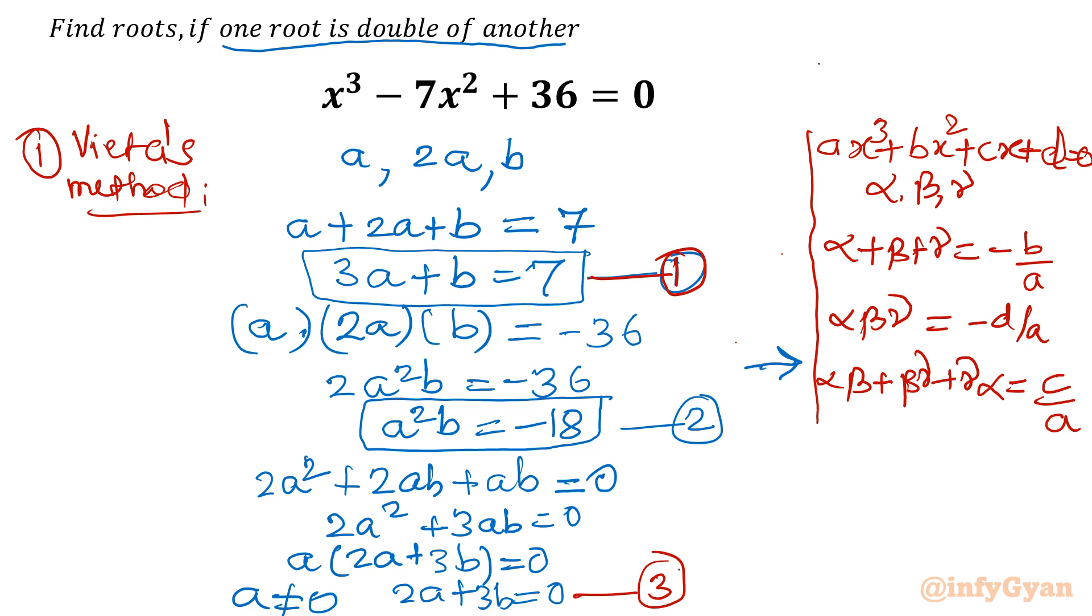I will multiply equation 1 by 3, then subtract equation 3. So 9a + 3b = 21, and equation 3 is 2a + 3b = 0. Once I subtract, I get 7a = 21, so a = 3.